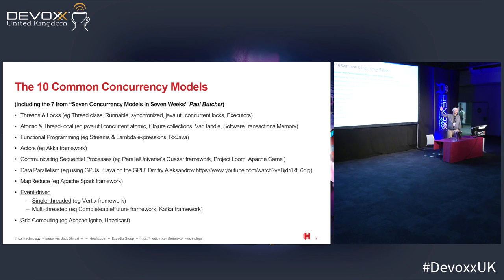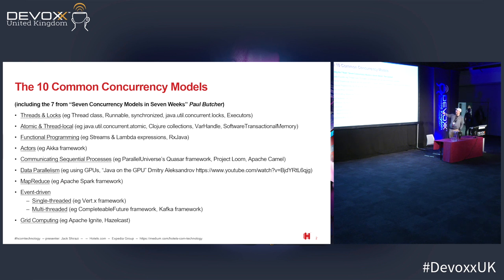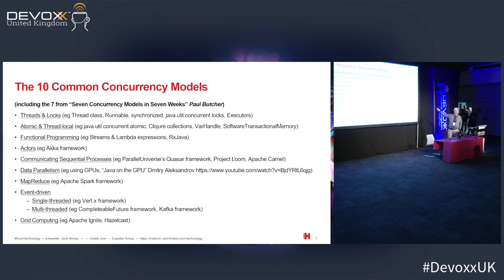If you're using a concurrent hash map, the underlying basis is on the atomic and thread local, and functional programming was introduced just in Java 8. Active has been around for a while. Some of these models are very generic. Data parallelism is quite specific — it was popularized because of image processing, but nowadays it's becoming more mainstream because of machine learning, which can benefit brilliantly from data parallelism.